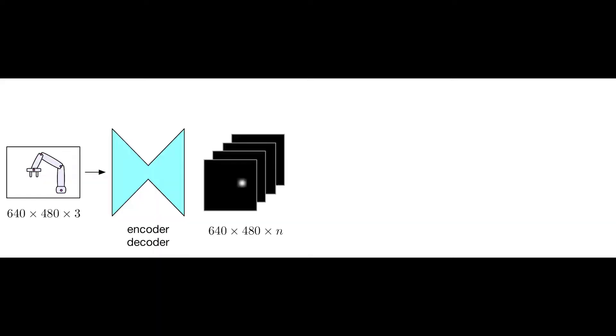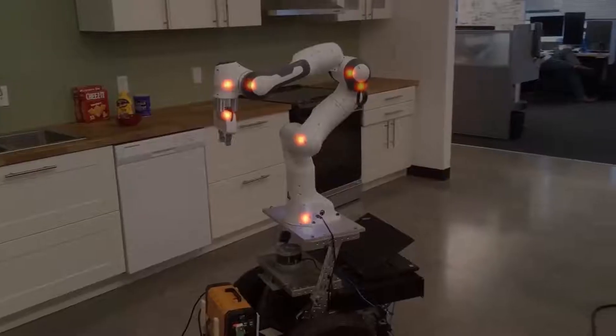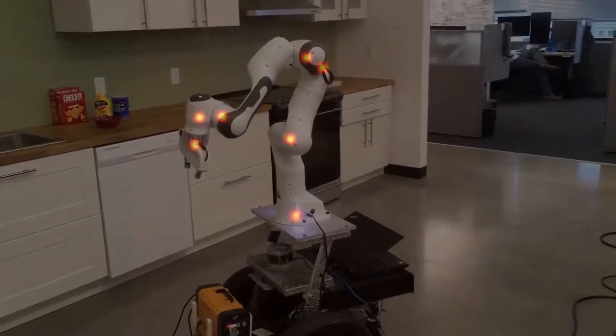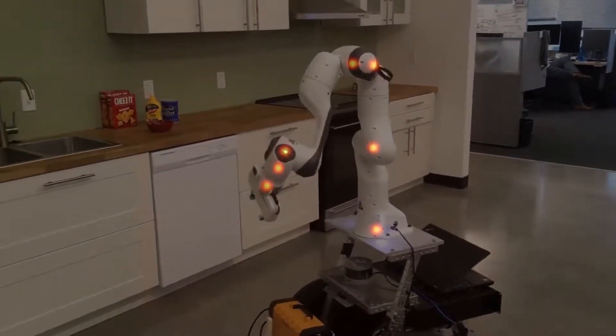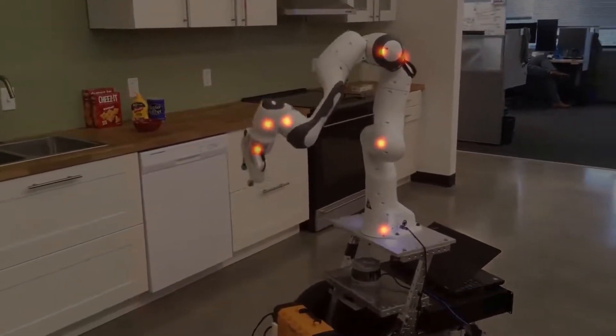The Dream Framework takes as input a single RGB image. The neural network outputs belief maps, which show a belief over where the key points should be found.